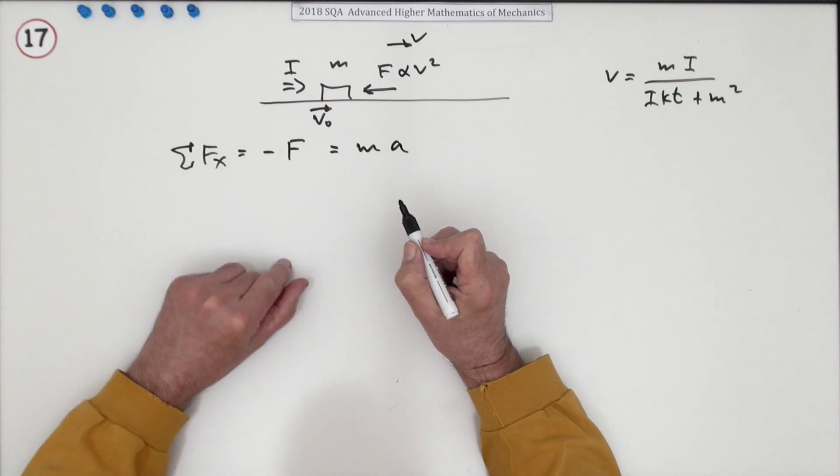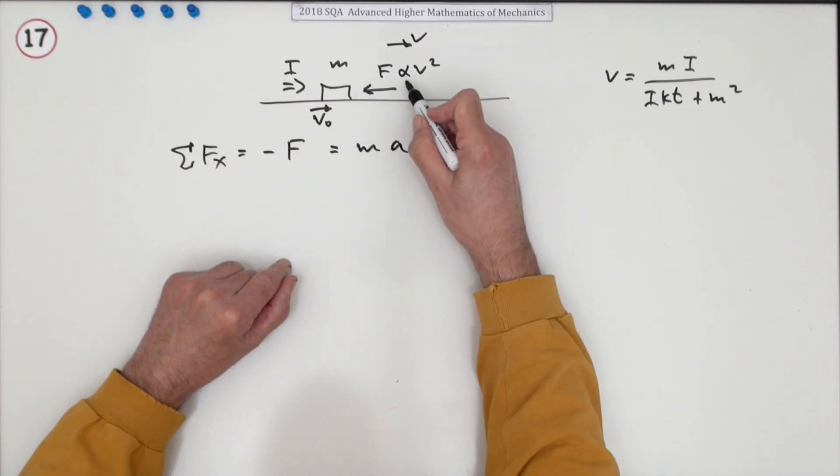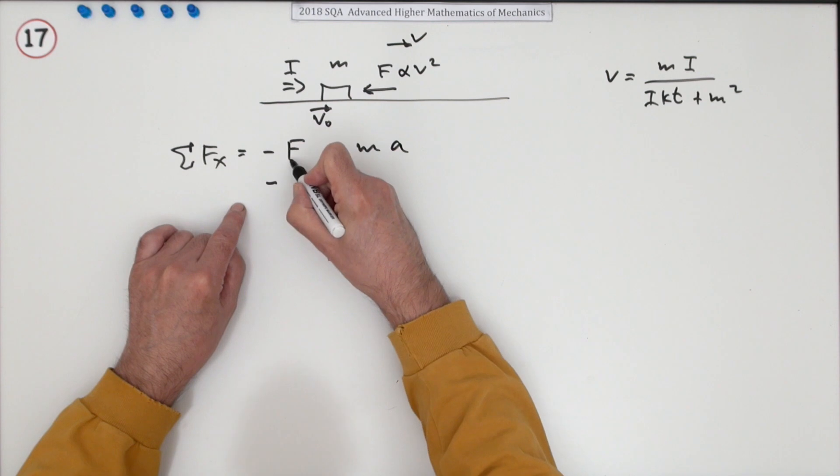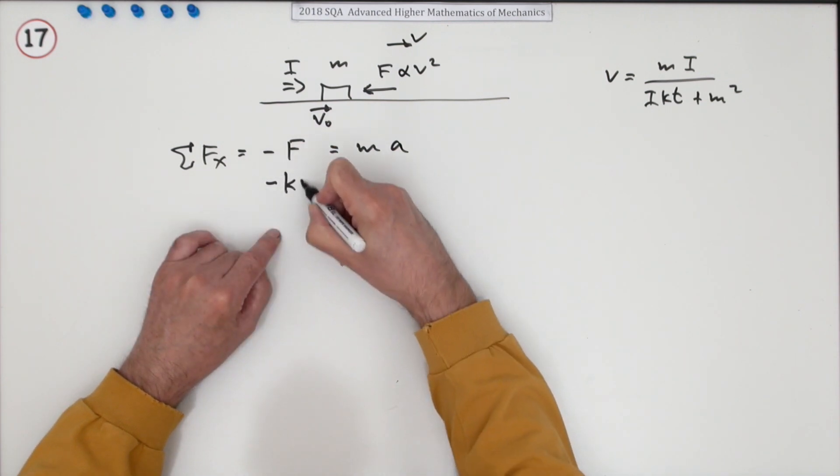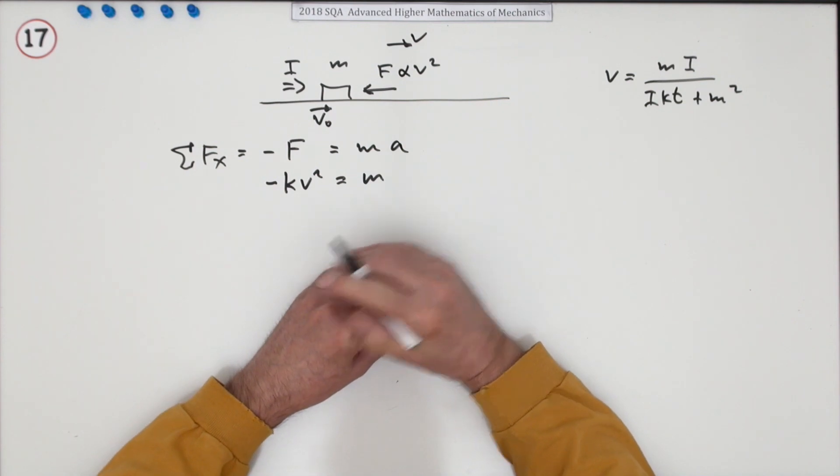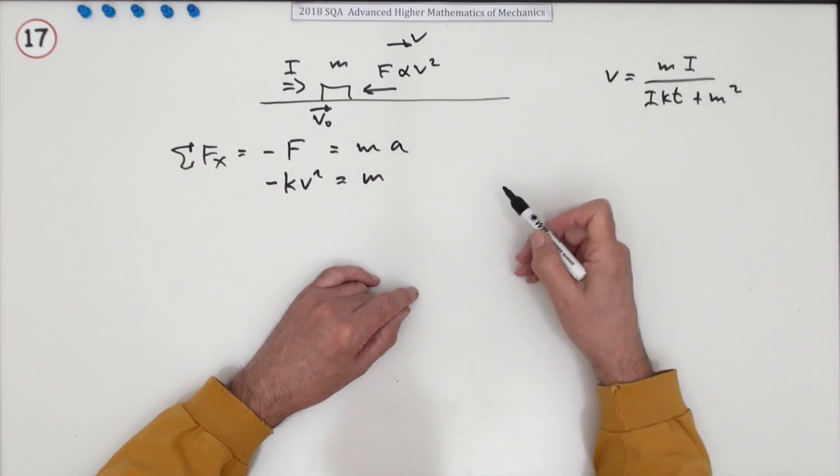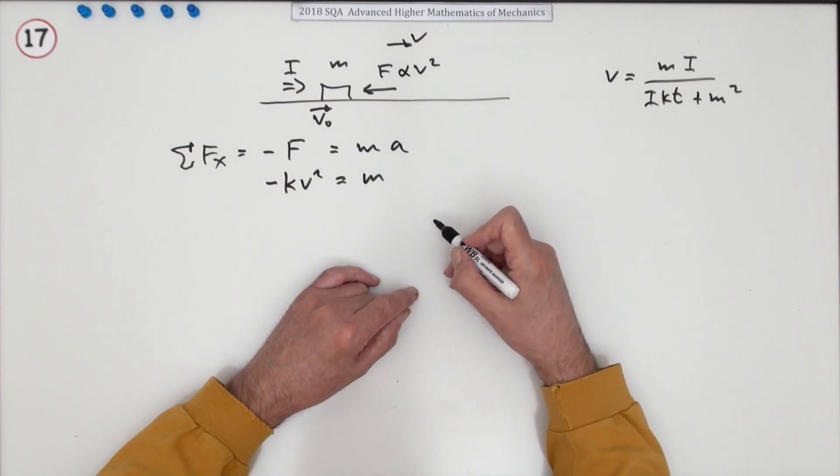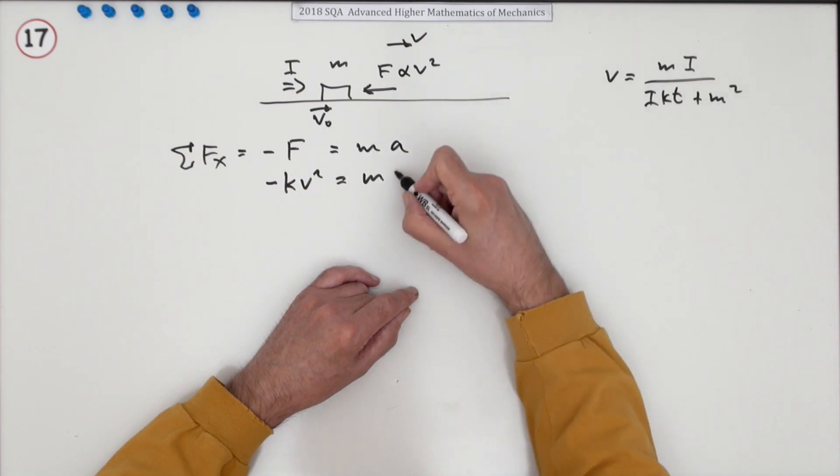Now what is that force? All it says about it is it's proportional to V squared, so I can write that as some constant times V squared. Now if I want a final formula that says V equals, and there's no mentions of A, I'll need to replace that A. And since it's time I want in it, I'm going to use A as dV by dt.